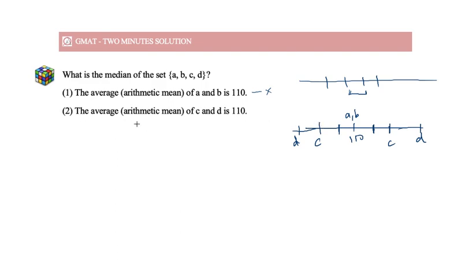Look at statement 2. The average of C and D is 110. Now instead of A and B, we have C and D over here and we do not know where A and B are. So certainly this statement alone will also not be sufficient.